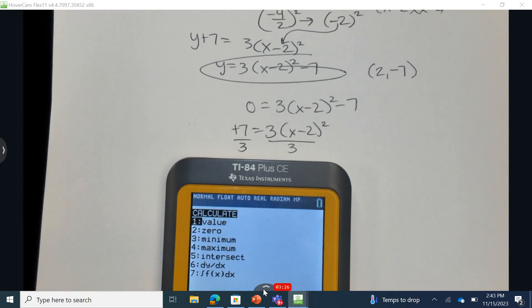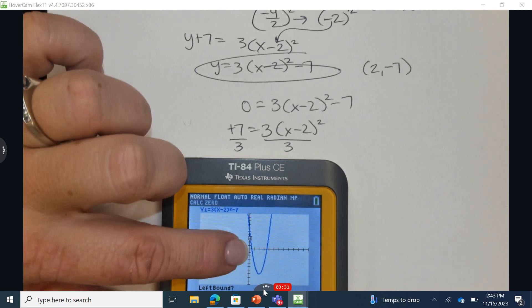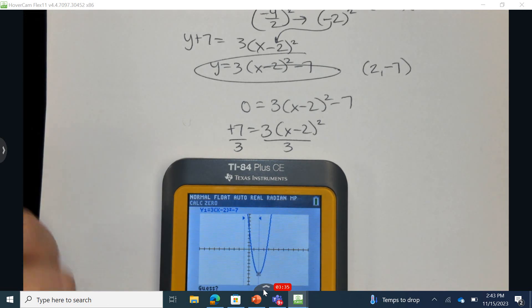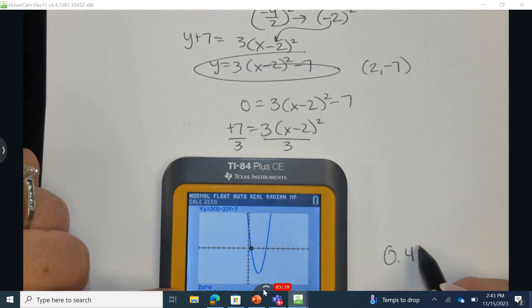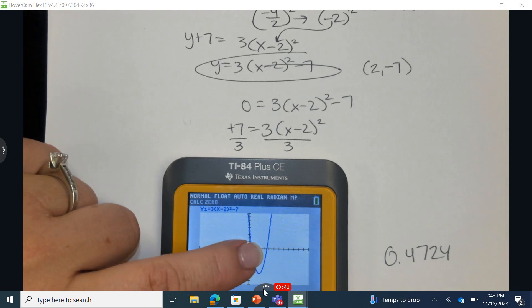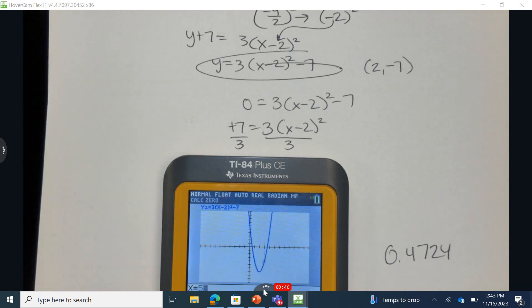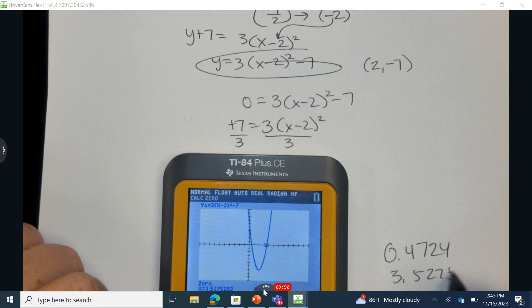Let's check our zero. Second trace, find the zero. So somewhere to the left would be somewhere over here. I choose actually a point like negative 1. Now to the right of this would be like 2. Press enter again. So I'm going to write this down 0.4724. Let's do the next one. Second trace 0. I'm going to choose 3. Now somewhere to the right would be like 5. Press and enter again. 3.5275.